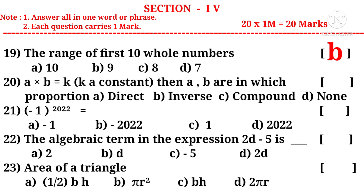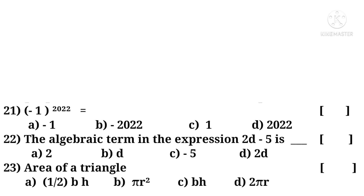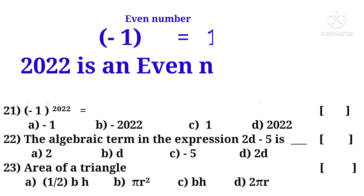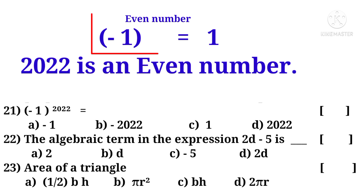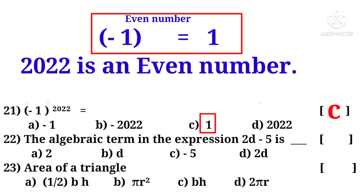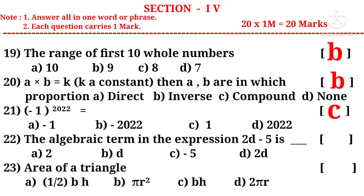Question 20: A into B equals K, where K is a constant — A and B are in inverse proportion. Correct choice is B. Question 21: Minus 1 whole to the power of 2022 — since 2022 is an even number, minus 1 to the power of an even number always equals 1. Correct choice is C. Question 22: The algebraic term in the expression 2D minus 5 — an algebraic term combines constant and variable, so it is 2D. Correct choice is D.